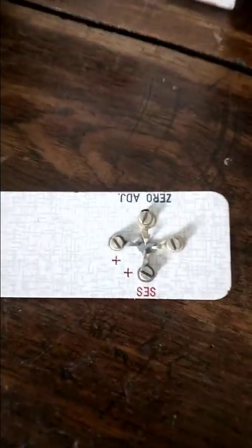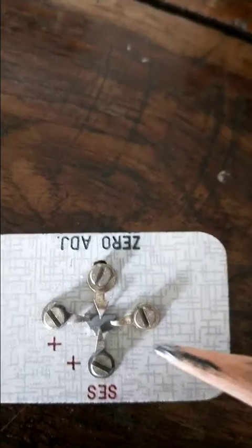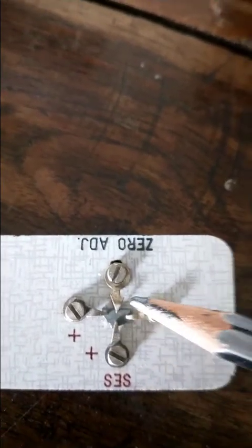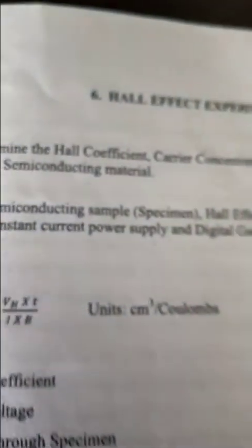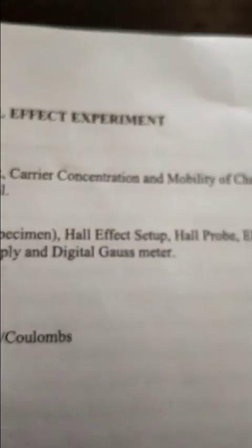This is the semiconductor sample — this is a germanium sample. It is a very small one. I'll show it with a pencil: this is your semiconductor, a very small sample. Now I'll come back to the Hall setup and Hall probe.